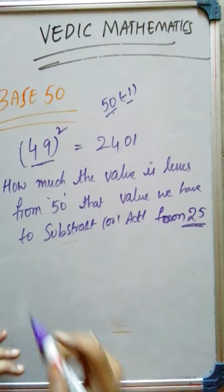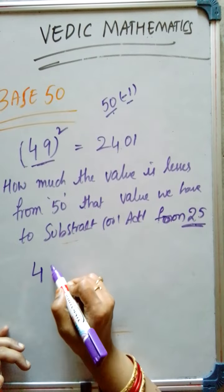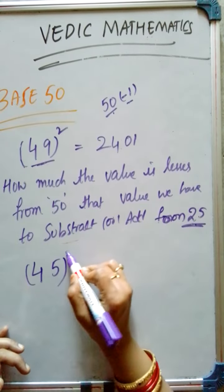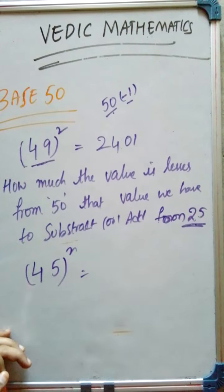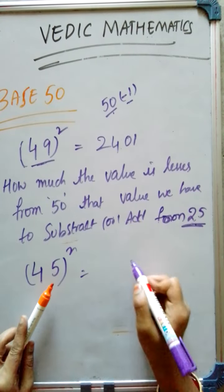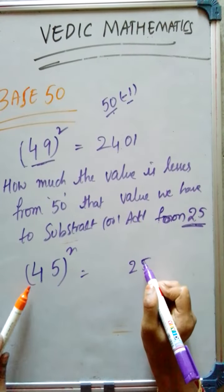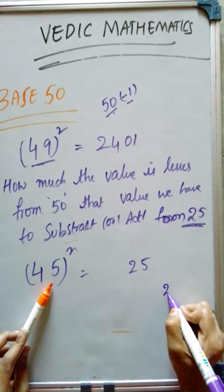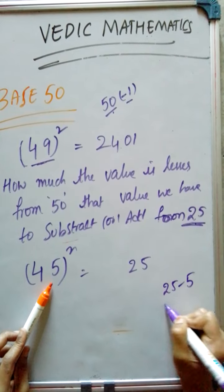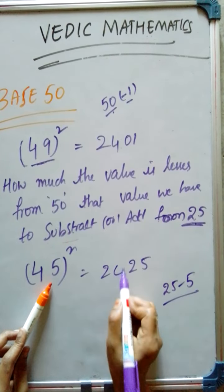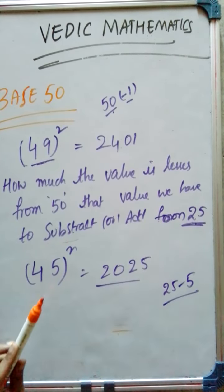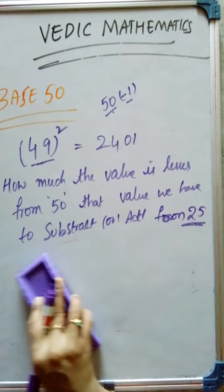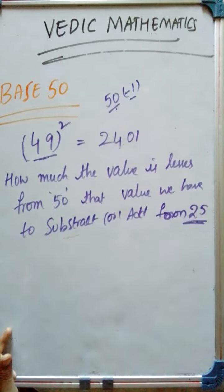Now, let us take another example. 45 square. Nothing but 5 square is 25. Now, 45 is how much lesser from 50? We have to subtract 25 minus 5. The answer will be 2025. This is the result using base 50.